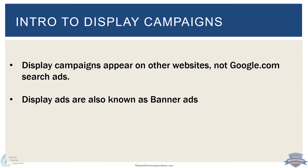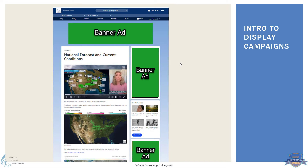Display campaigns appear on other websites, not Google.com search ads. Display ads are also known as banner ads — it's the same thing, it's on Google's display network. The type of ad is a banner ad, which is what the format is technically called. You've probably seen these if you're on weather.com or a news website. You'll have a banner ad at the top, to the right, or on the bottom. Typically the very top and the right side is where you'll see banner ads.